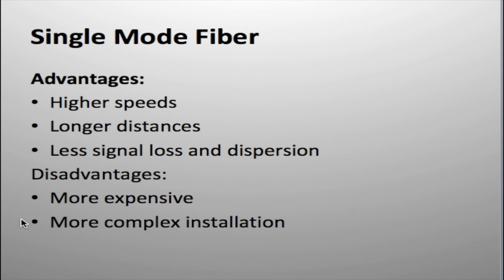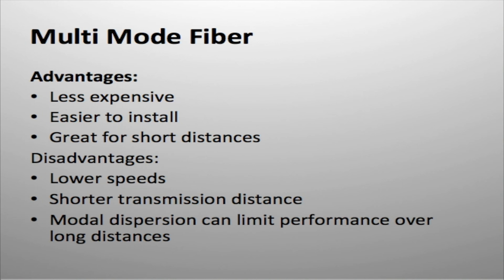With single mode fiber, the fiber has to be precisely aligned or it won't work, because the core is extremely small. The advantages of multi-mode fiber are that it's less expensive, easier to install — it doesn't require the same level of skill — and it's great for short distances. The disadvantages are lower speed, shorter transmission distance, and modal dispersion, which is probably one of the biggest issues with multi-mode fiber and will be covered more in the next video.